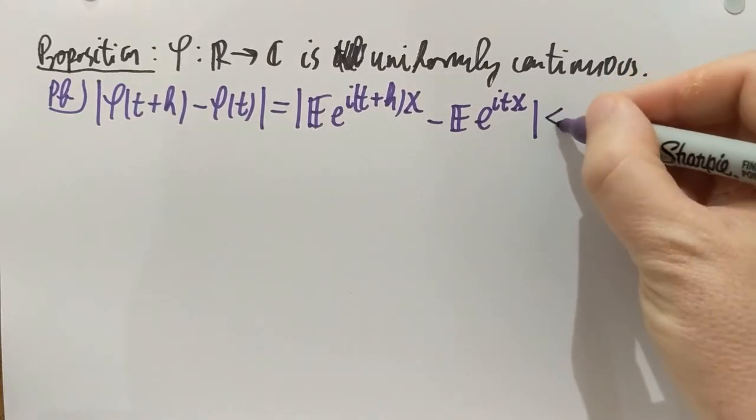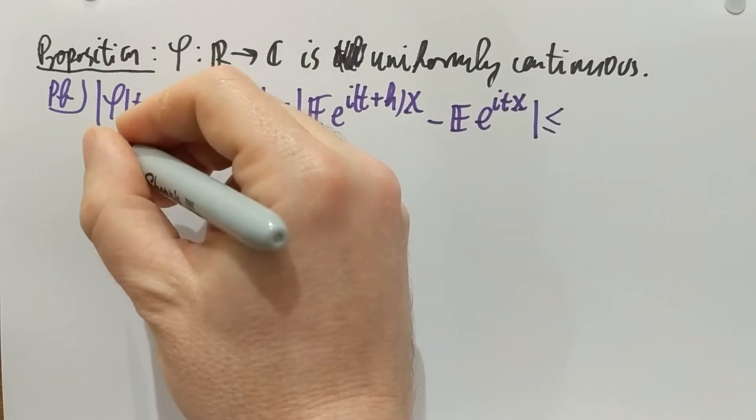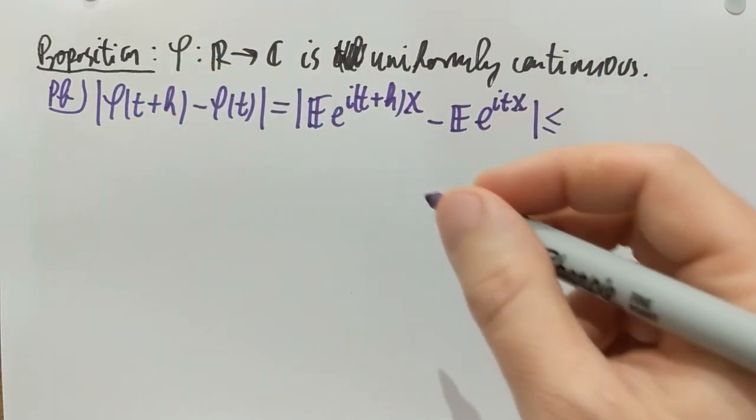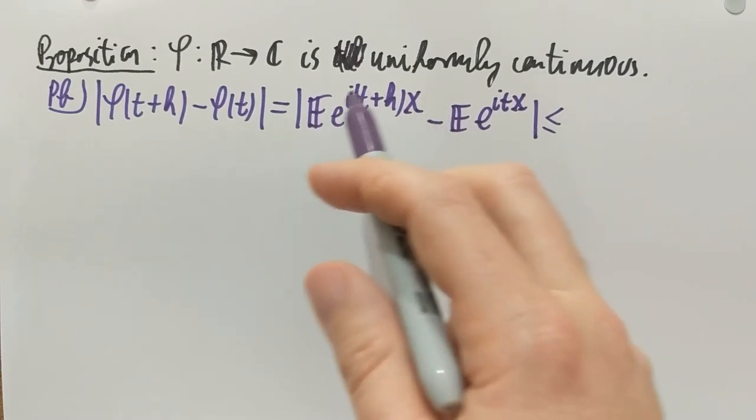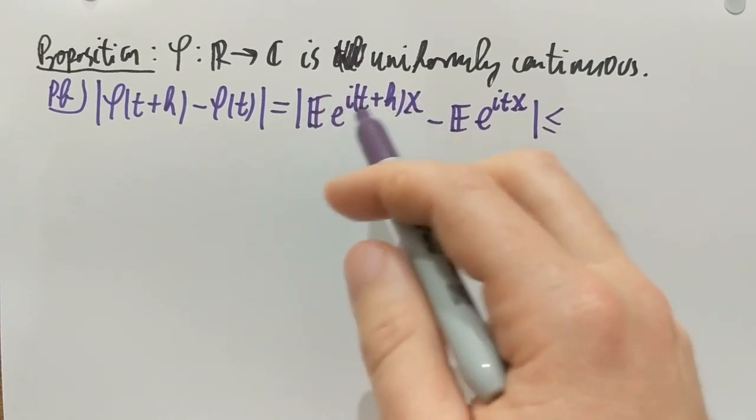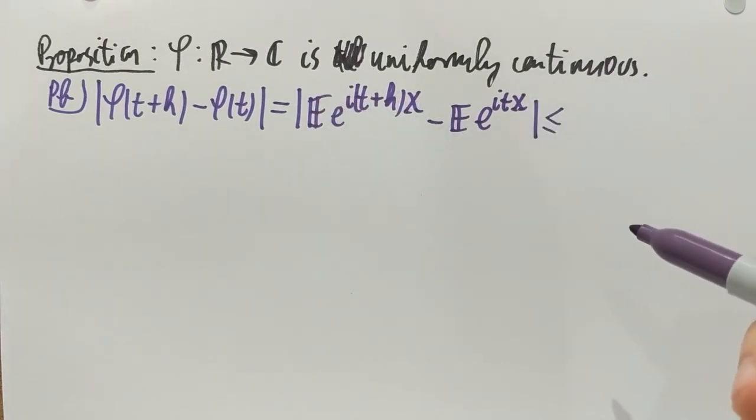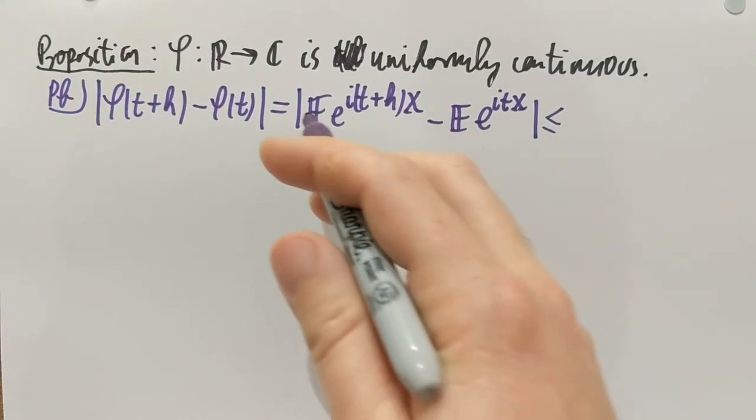And that tells us that this is smaller than or equal—so, I do two steps at once now. First, I want to collect the expectation jointly. So, it's the expectation of the first exponential minus the second under a common expectation. And second, I'm going to swap the expectation with the absolute value and write this.